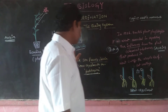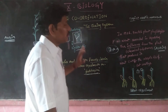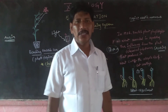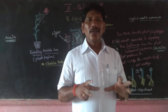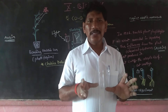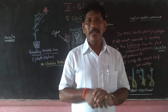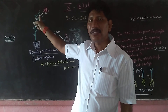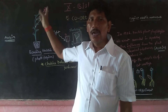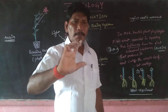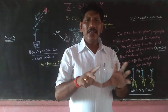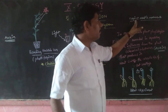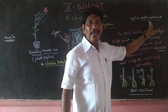So, auxin is a plant hormone. It was first noticed by Charles Darwin and Francis Darwin, and it was collected from oat seedlings. Now, the last topic of this coordination chapter — we have two types of movements in plants. One is tropic movements, and the second is nasty movements.